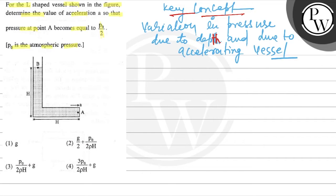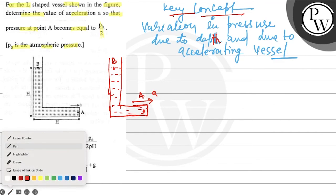Watch out. We can see here, L-shaped. This is the B point, this is the A point, and this depth is h and this length is h.